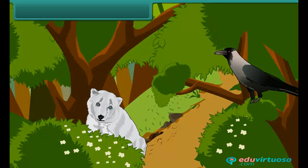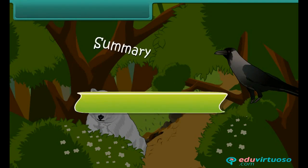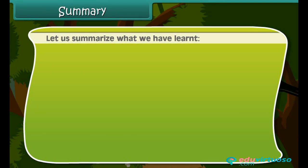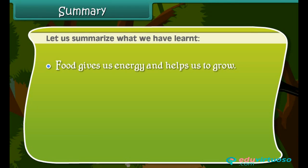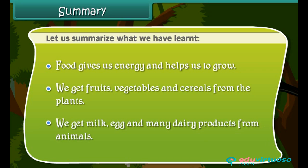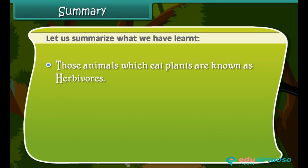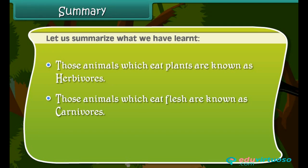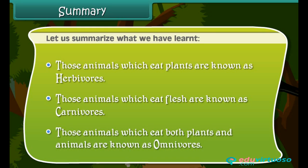Let us summarize what we have learned. Food gives us energy and helps us to grow. We get fruits, vegetables, and cereals from plants. We get milk, eggs, and many dairy products from animals. Animals that eat only plants are herbivorous, those that eat flesh are carnivorous, and those that eat both plants and animals are omnivorous.